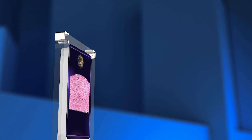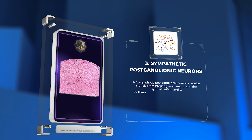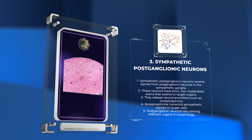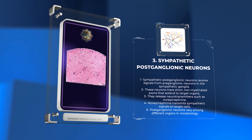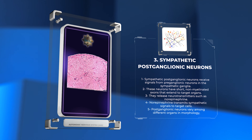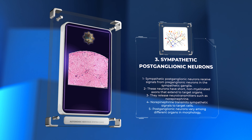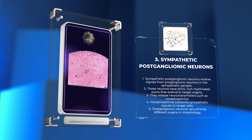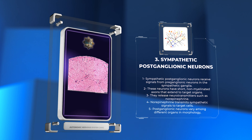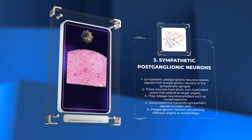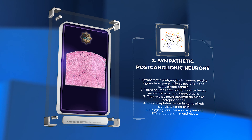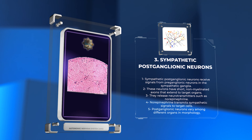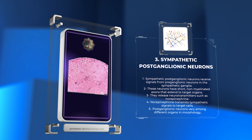Sympathetic postganglionic neurons receive signals from preganglionic neurons in the sympathetic ganglia. These neurons possess short, non-myelinated axons that extend to target organs. They release neurotransmitters such as norepinephrine, responsible for transmitting sympathetic signals to target cells. Postganglionic neurons differ among distinct organs, with variations in morphology, neurotransmitter composition, and receptor profile.